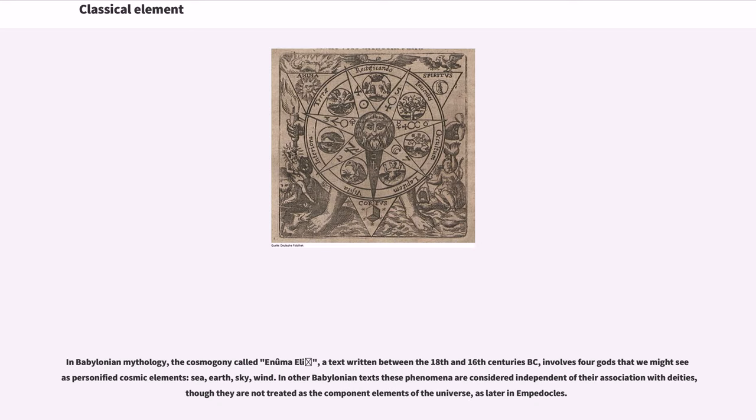In Babylonian mythology, the cosmogony called Enuma Elish, a text written between the 18th and 16th centuries BC, involves four gods that we might see as personified cosmic elements: sea, earth, sky, wind. In other Babylonian texts these phenomena are considered independent of their association with deities, though they are not treated as the component elements of the universe, as later in Empedocles.